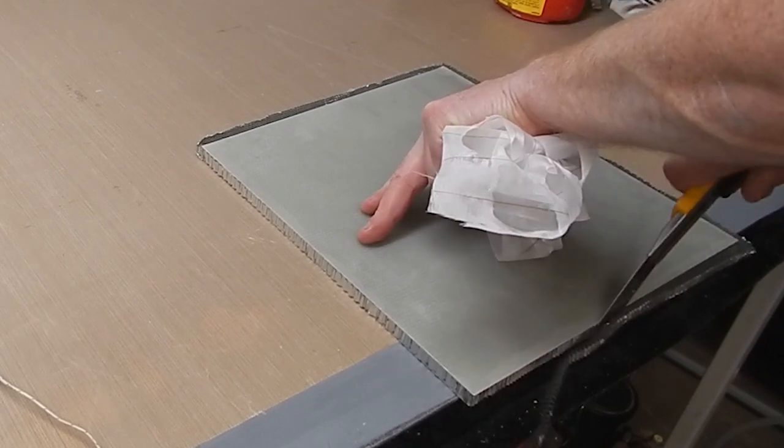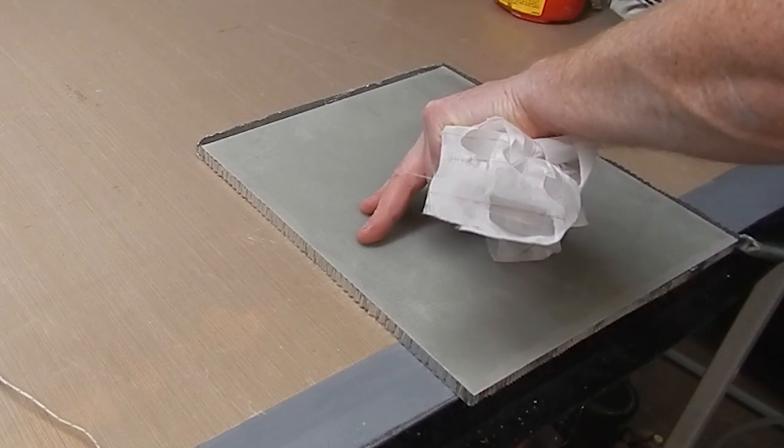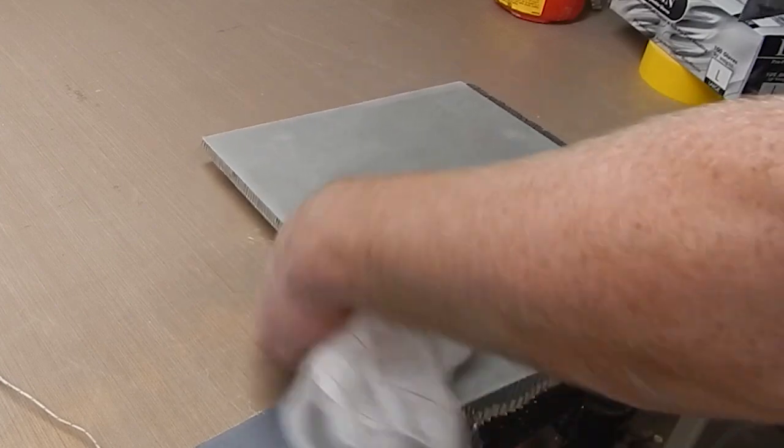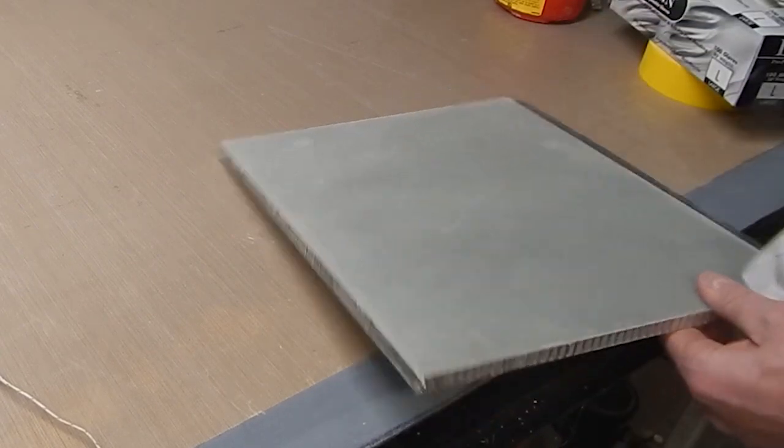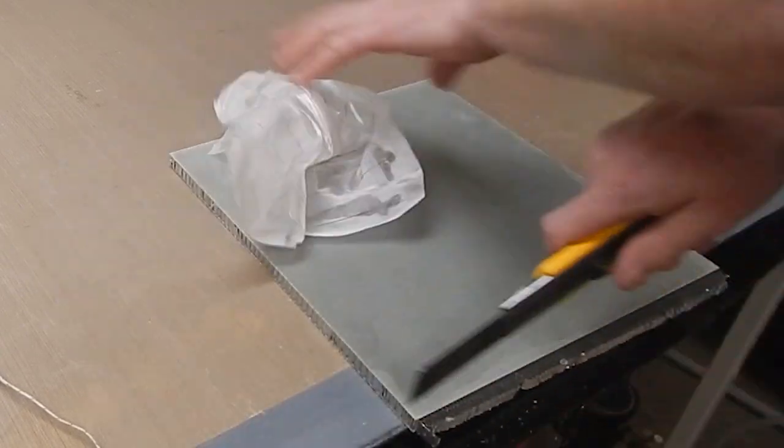You could take this panel and cut it with a bandsaw or a jigsaw or anything like that. Or you could pre-cut the G10 and just glue it around slightly oversized chunks of honeycomb.